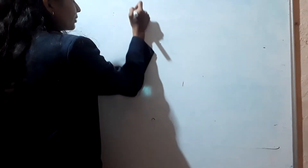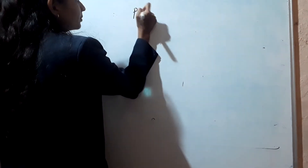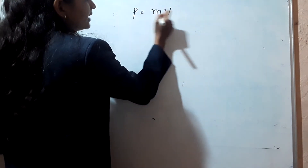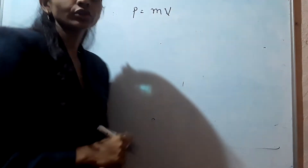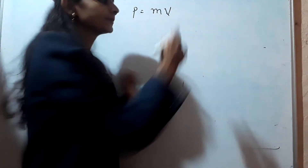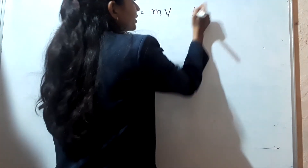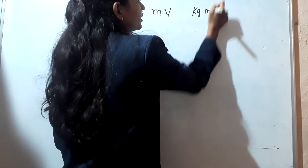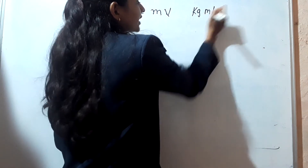Hello everyone. In the first video we discussed about momentum. Momentum is denoted by P, and P is equal to the product of mass and velocity. The unit of momentum is kilogram meter per second.